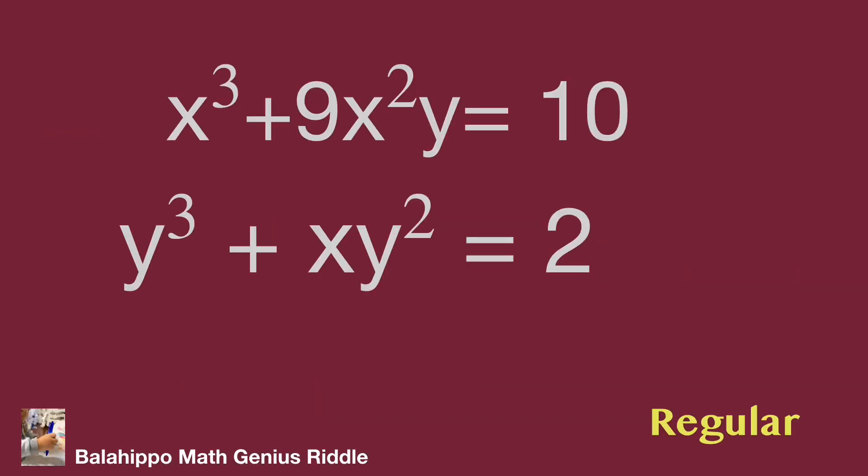The given equations: x cubed plus 9x squared y equals 10, and y cubed plus xy squared equals 2. Let's start the first approach. We have x squared and x cubed in the first equation, y squared and y cubed in the second equation. I'm going to connect this finding.